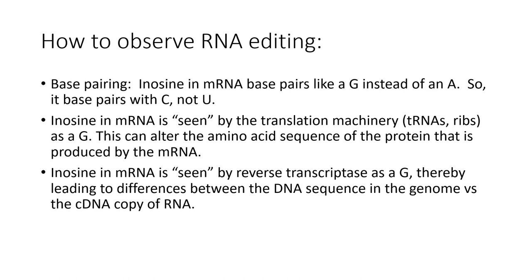A key concept is how RNA editing can be observed. Inosine base pairs in the mRNA context like a G instead of an A — it pairs with C, not U. Therefore, the translation machinery, reverse transcriptase, and splicing machinery all read inosine as a G. Editing events are detected by comparing genomic DNA sequences with cDNA sequences prepared by reverse transcription of mRNAs: a position that shows an A in genomic DNA but a G in cDNA indicates an editing event. Editing is not always absolute — some sites are strongly edited, others only partially.